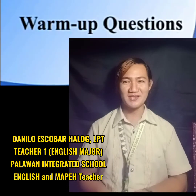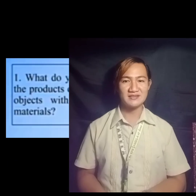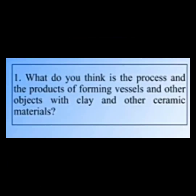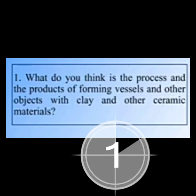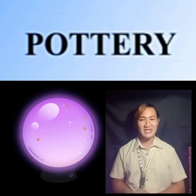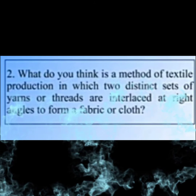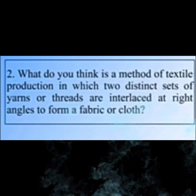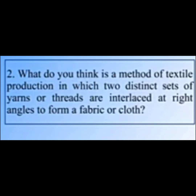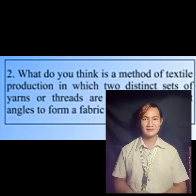I have here two questions for you to answer. The first question is: What do you think is the process and the products of forming vessels and other objects with clay and other ceramic materials? The answer is Pottery. The second question is: What do you think is the method of textile production in which two distinct sets of yarns or threads are interfaced at right angles to form a fabric or cloth? The answer is weaving.